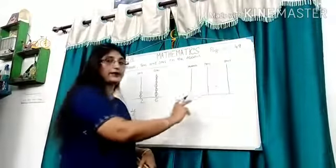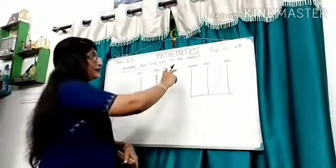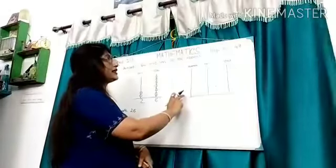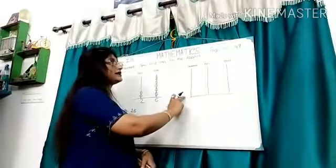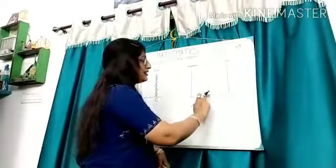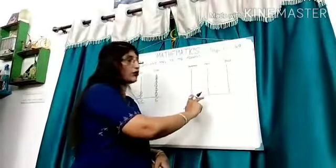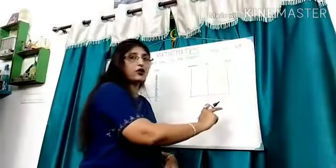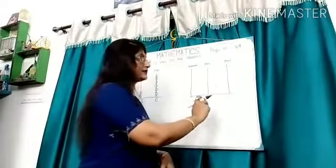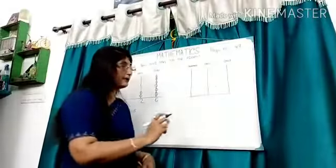In a 3 spike Abacus, leftmost spike denotes 100 place. Middle spike denotes 10 place. And right side spike denotes 1 place.